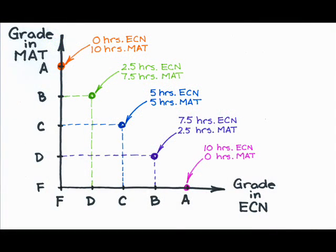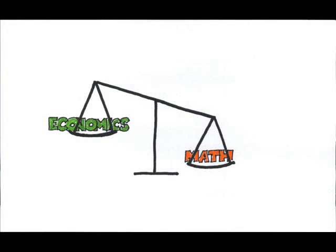Think back to the example of the student. What was the opportunity cost of getting a better grade in economics? This student would have to accept a lower grade in math, so the sacrifice was the math grade.